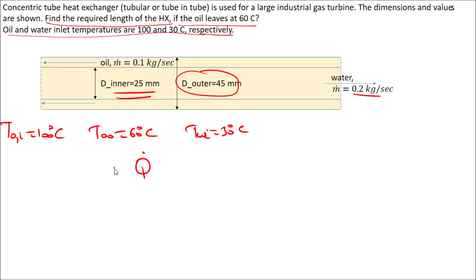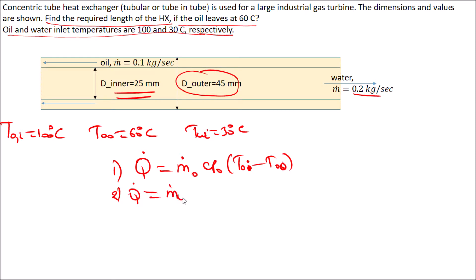Equation one: Q-dot equals m-dot_oil times Cp_oil times (T_oil_inlet minus T_oil_outlet), using positive values with the higher inlet temperature first. Equation two: Q-dot equals m-dot_water times Cp_water times (T_water_outlet minus T_water_inlet), again keeping all values positive.